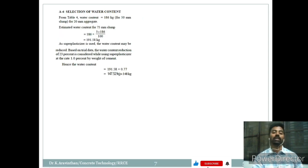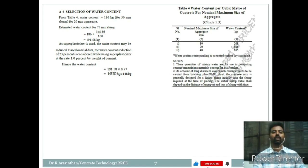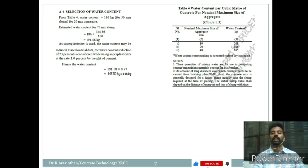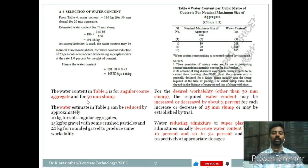Next, we shall identify the water content. For this, we refer to Table 4 of IS 10262, which provides a guideline for water content per cubic meter of concrete for normal maximum size of aggregate. For 20mm aggregate, the suggestion is 186 kg/m³. This is given for 50mm slump and for angular coarse aggregate. We require 75mm slump.